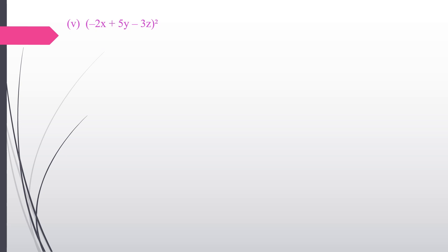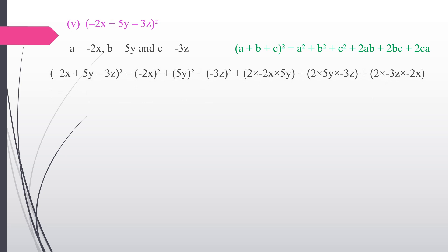Fifth subdivision: (−2x + 5y − 3z)². Using the same identity (a + b + c)² = a² + b² + c² + 2ab + 2bc + 2ca, where a = −2x, b = 5y, c = −3z. Applying: (−2x)² + (5y)² + (−3z)² + 2(−2x)(5y) + 2(5y)(−3z) + 2(−3z)(−2x). The final answer is 4x² + 25y² + 9z² − 20xy − 30yz + 12xz.